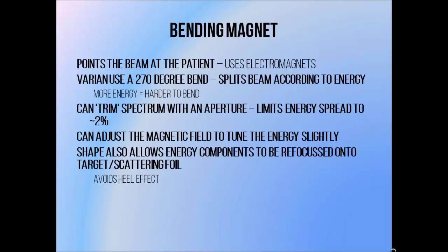The job of the bending magnet is to point the beam at the patient. In order to do this we like to use electromagnets, because when you pass electrons through a magnetic field they tend to follow a circular path. Electromagnets also allow us to adjust field strength, and different energies of electron beam require different strengths of magnetic field since more energetic electrons are tougher to bend.